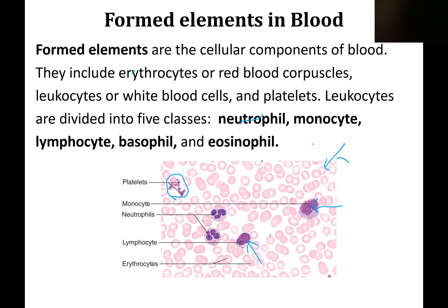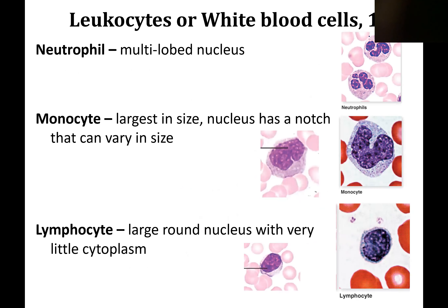We will go through the attributes, and you can put little notations next to your boxes so that you know what they're going to look like. Then we'll take a look at some pictures from actual slides. Neutrophils have multiple lobed nuclei, so this may look like different pieces, but it's all one piece — they look like sausage links for their nucleus.